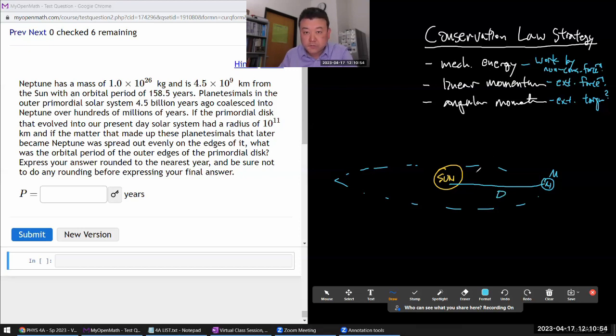With an orbital period of, yeah, so it has an orbit. We are given the period. Planetesimals in the outer primordial solar system - take astronomy class, very interesting. If the primordial disk had a radius, that's interesting.